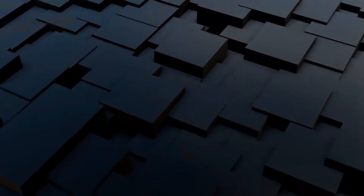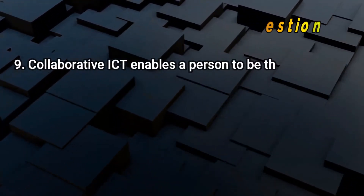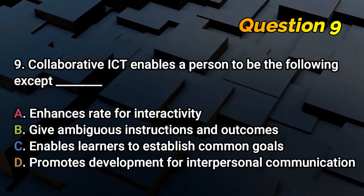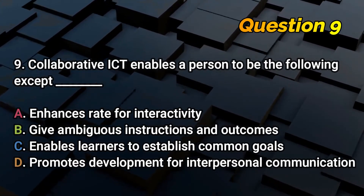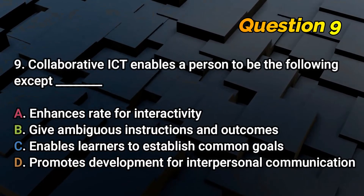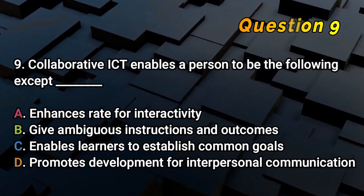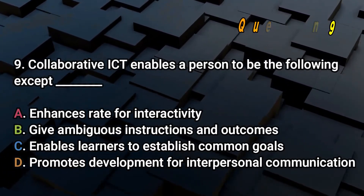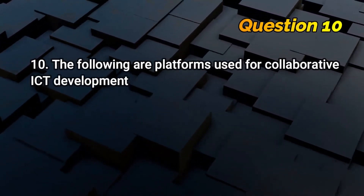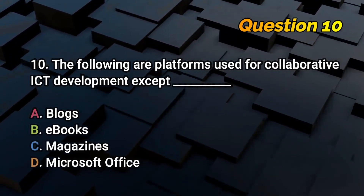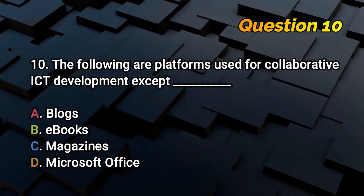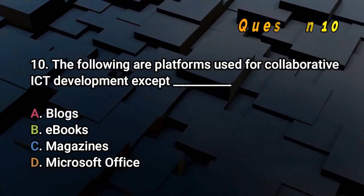Number 9: Collaborative ICT enables a program to provide information — a person to be the following except A. Enhances rate for interactivity, B. Give ambiguous instructions and outcomes, C. Enables learners to establish common goals, or D. Promotes development for interpersonal communication? Number 10: The following are platforms used for collaborative ICT development except A. Blogs, B. Ebooks, C. Magazines, or D. Microsoft Office?